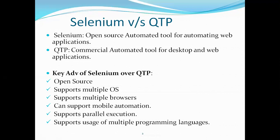So what is Selenium? Selenium is basically an open-source automated tool used for automating web applications — for example, e-commerce websites, banking websites, or any other website. Whichever web application you want to automate can be handled using Selenium. However, it does not automate desktop applications or any applications that are not accessed through a browser.